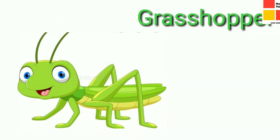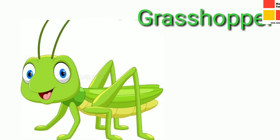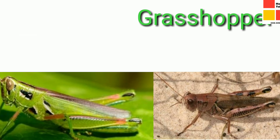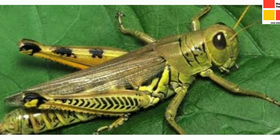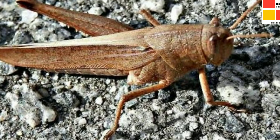Children, which is this insect? Yes, it is a grasshopper. A grasshopper is green and brown in color. A grasshopper will be green in color if it is living in lush green areas, but if it is living in a desert or dry areas, the grasshopper's color will be brown.